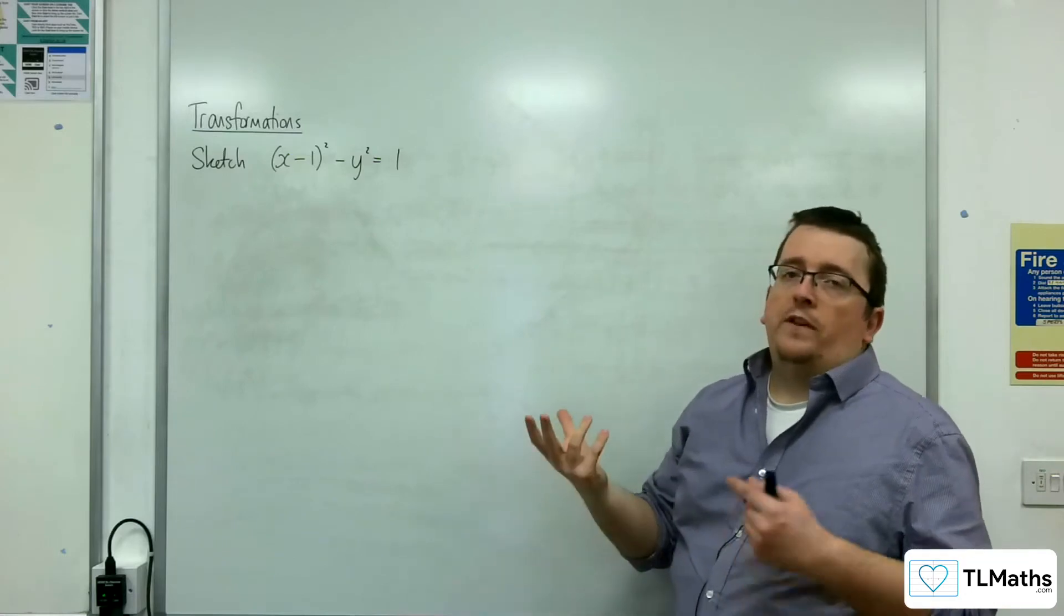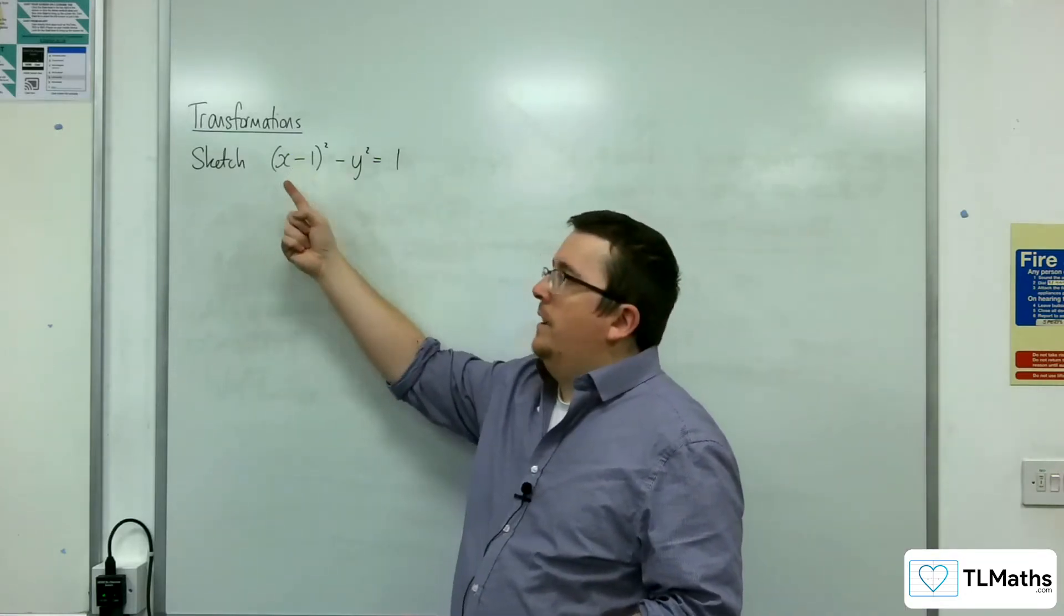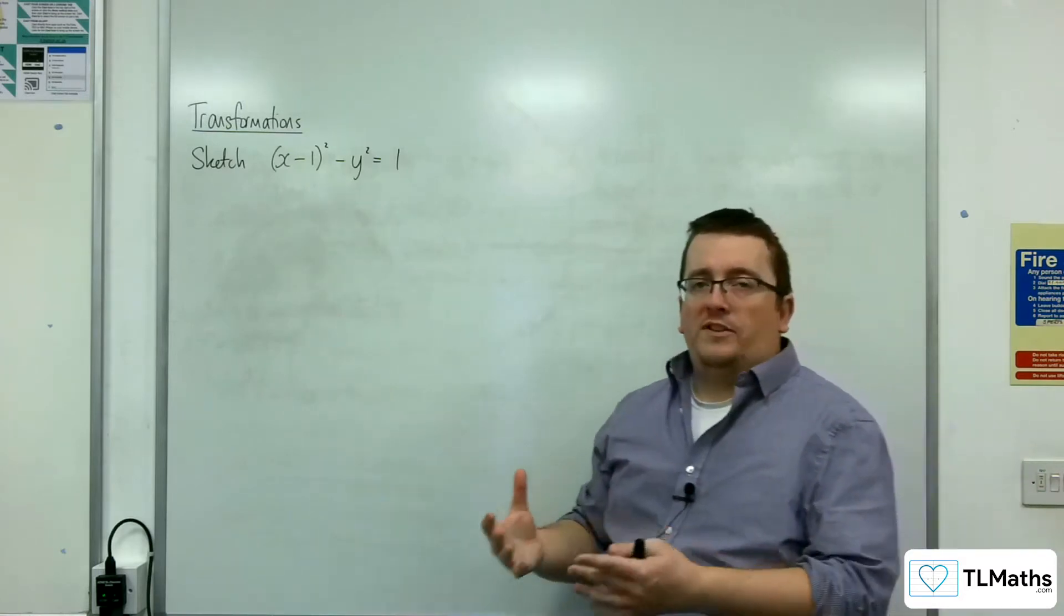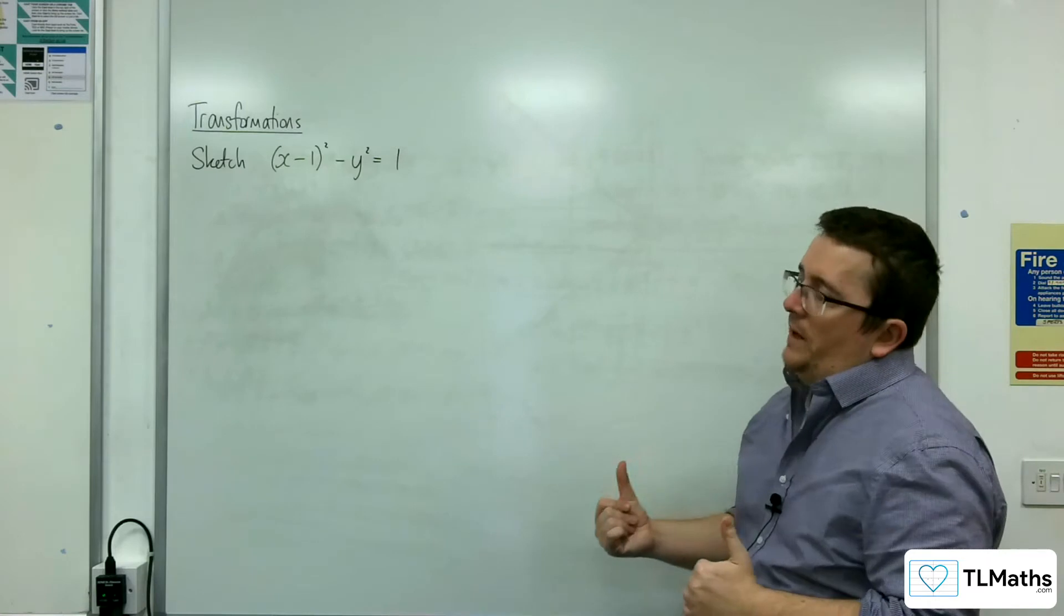Now with a hyperbola, we've got those two asymptotes. The x here has been replaced with x take away 1, so a translation has occurred moving it one step to the right. That's a translation by the vector 1, 0.